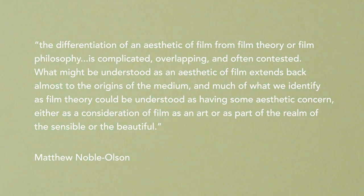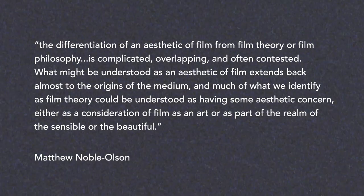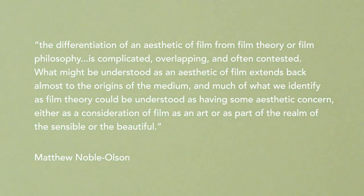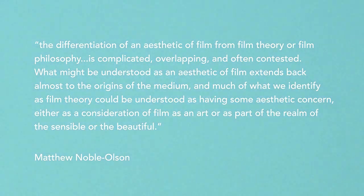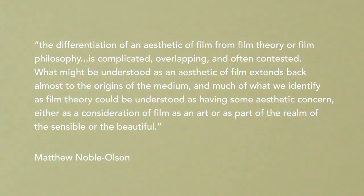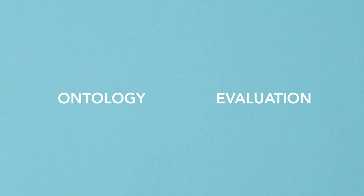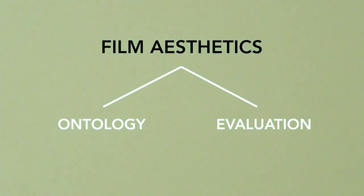What might be understood as an aesthetic of film extends back almost to the origins of the medium, and much of what we identify as film theory could be understood as having some aesthetic concern, either as a consideration of film as an art or as part of the realm of the sensible or the beautiful. Both of these approaches — the discussion of the medium's ontology and an evaluation of the film's artistic merits or demerits — would fall within the realms of film aesthetics.